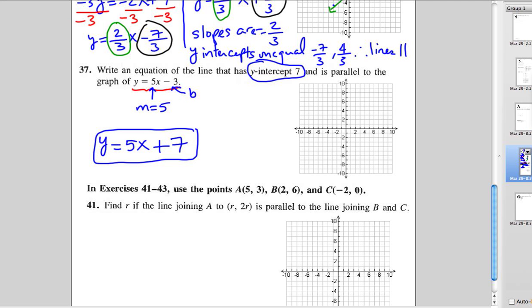To graph it, if we're going to graph the new line, it has a y-intercept of 7. That's right here. And it has a slope of 5. That means we go up 5 and over 1. Or we go down 5 and to the left 1.